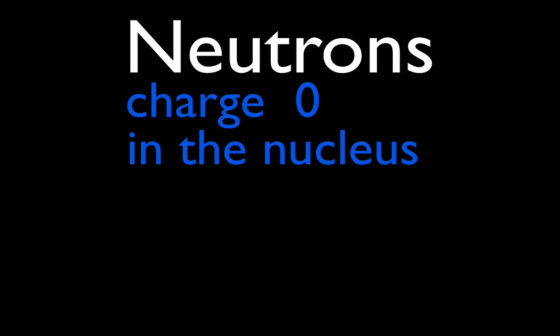Okay, neutrons. Well, what's the charge on a neutron? The charge on a neutron is zero. It has a neutral charge. Where are they? Well, they're also in the nucleus. Along with the protons, they're in the nucleus. Now, their mass is the same mass, approximately, of a proton, which is 1.6 times 10 to the minus 27 kilograms. That is a really small mass.